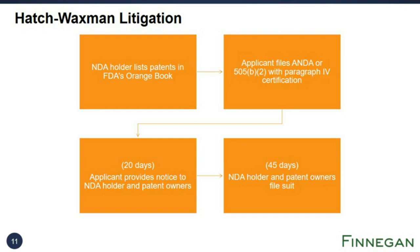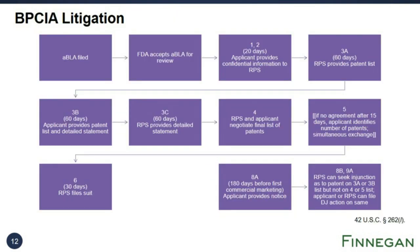The steps leading to BIPCA litigation are generally more complex. The steps are called the patent dance and are governed by 42 U.S.C. 262(l). Starting from the top left, the ABLA is filed and the FDA accepts it for review. Under L(1) and L(2), the applicant has 20 days to provide the application and other confidential information to the reference product sponsor. Under L(3)(A), the sponsor provides a patent list within 60 days—patents the sponsor believes could reasonably be asserted.